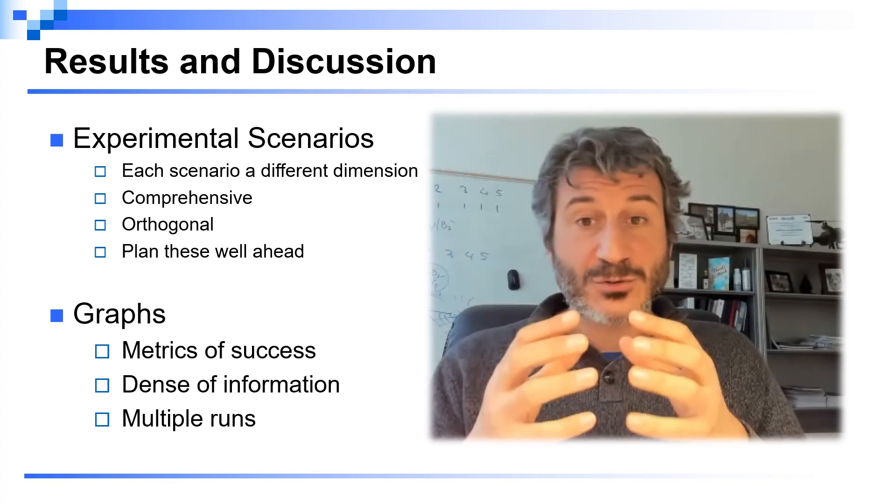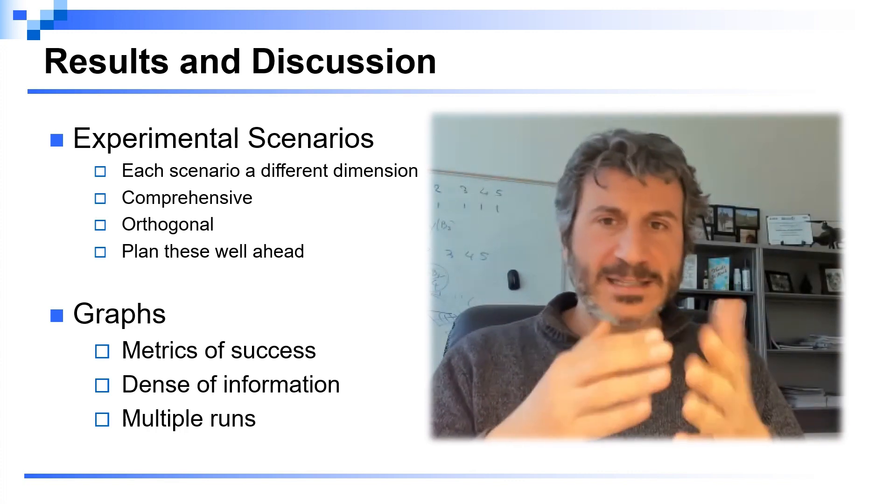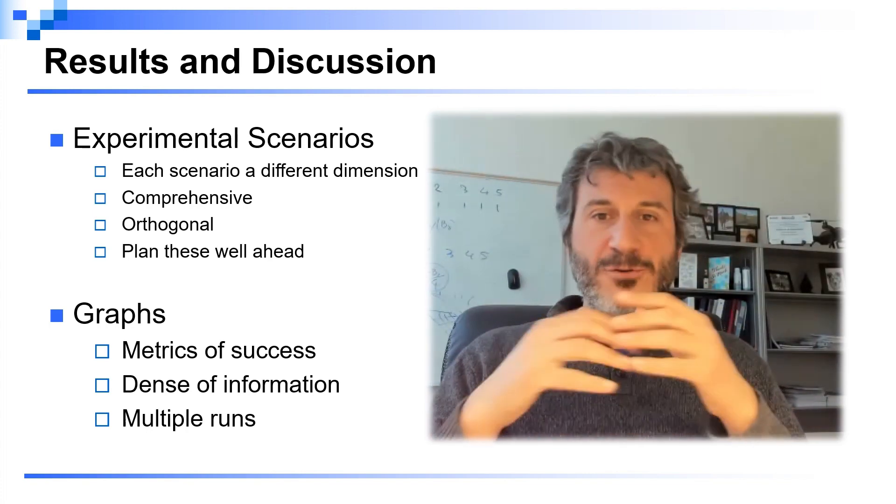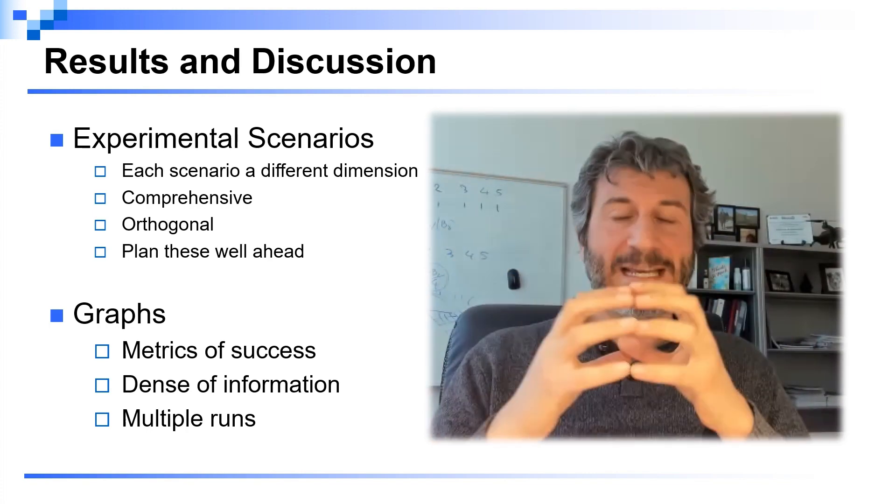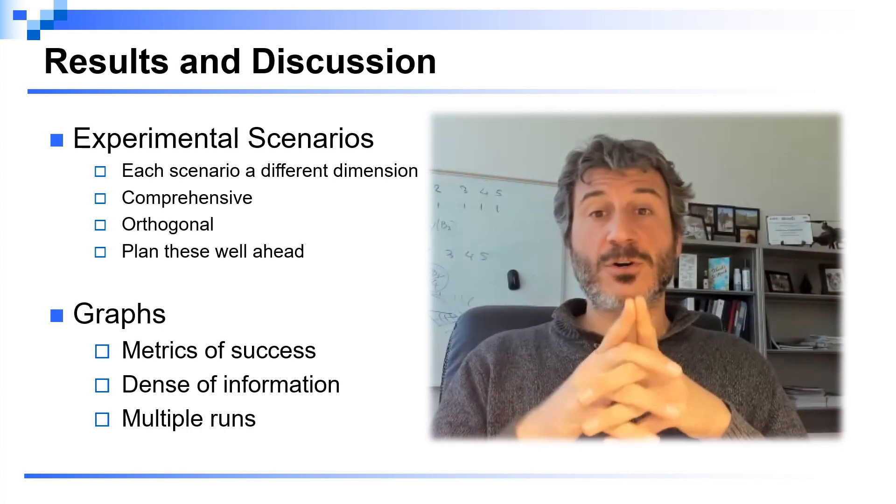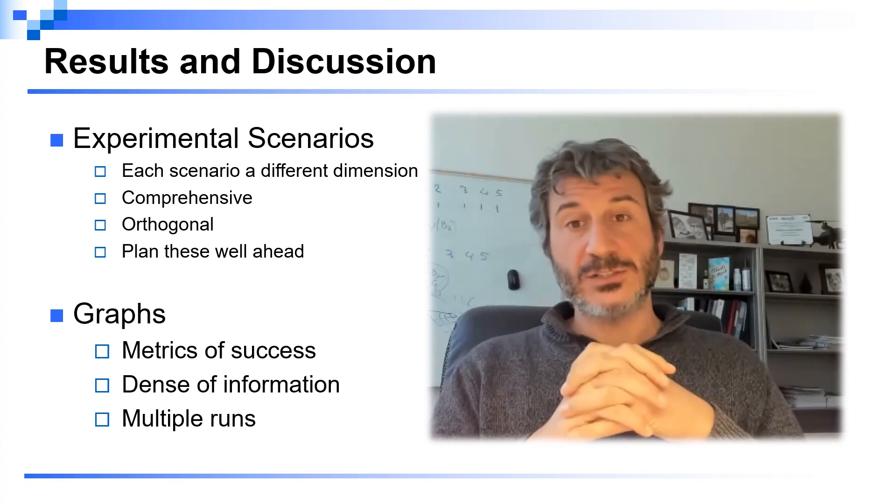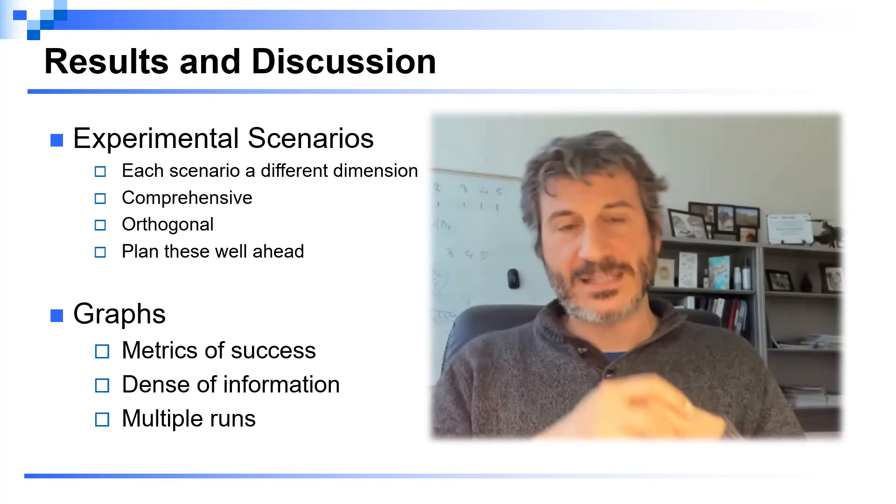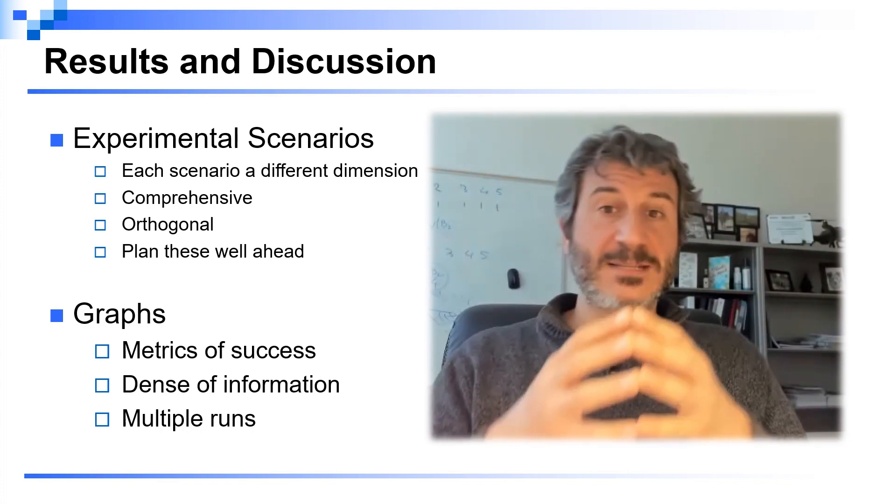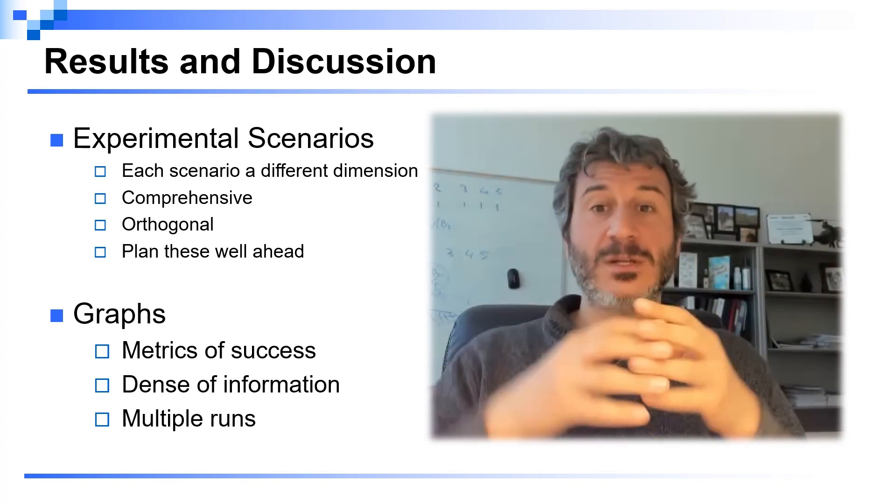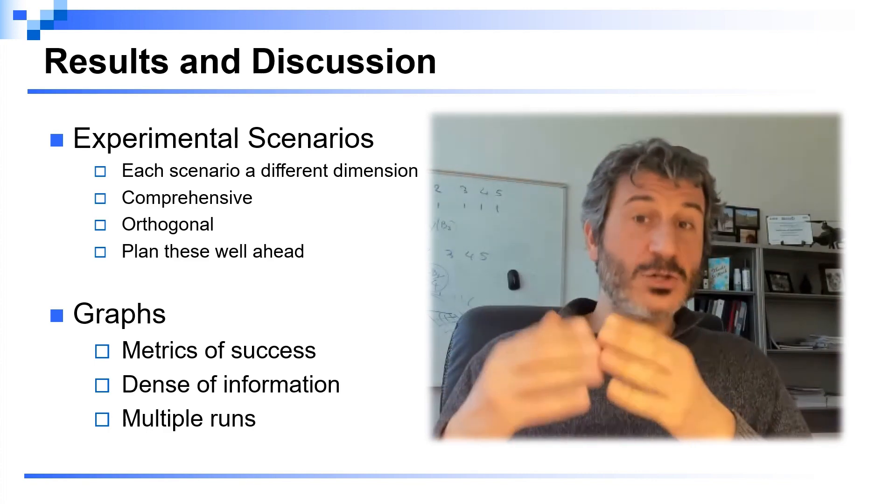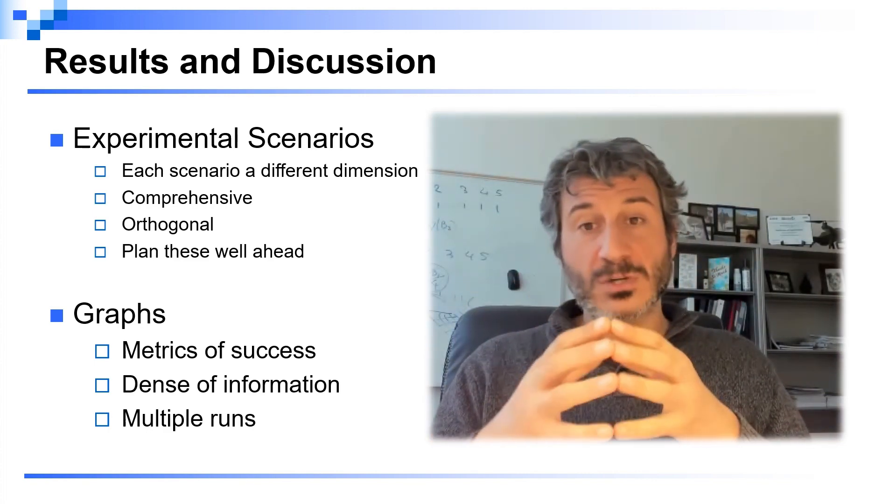For each experimental scenario, what are the graphs that you're going to produce? What is going to be on the x-axis and the y-axis? What are the metrics of success? It's very important that you try to provide as much information as possible. I often say that these graphs should be dense of information—the reviewer should actually spend time understanding what is the trend you are seeing, instead of having many different graphs that say information that is somehow redundant. It's also very important to perform multiple runs. Every time we draw a point in a graph, you should make that point statistically meaningful. It should represent some sort of average and confidence interval of the actual possibilities that may happen in that specific setting.